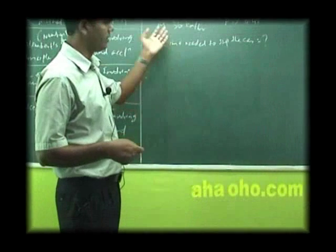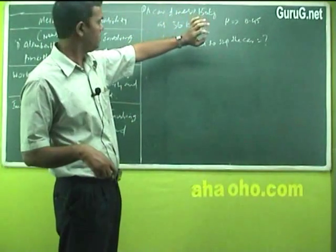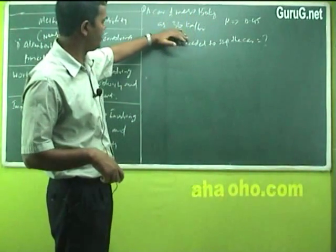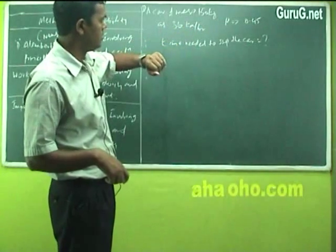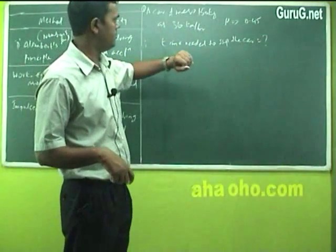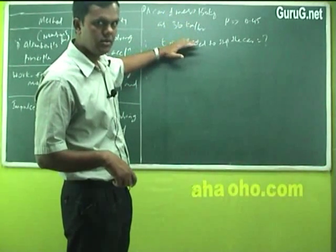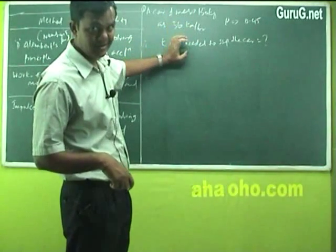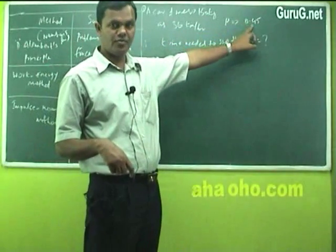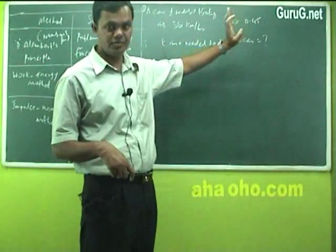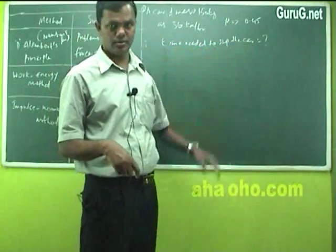Here is a problem about impulse momentum. A car of mass 150 kilograms is moving at a speed of 36 kilometers per hour. The coefficient of friction between the tire and the road is 0.45. The question is to find out what is the time needed to stop the car.